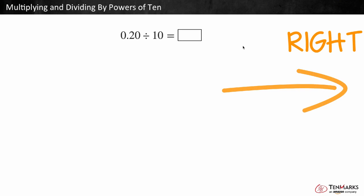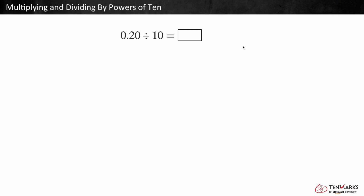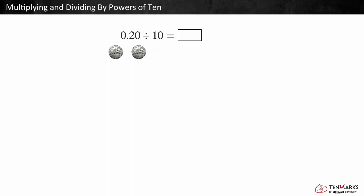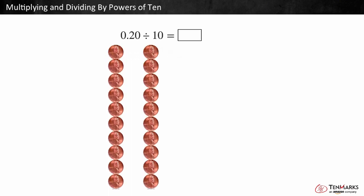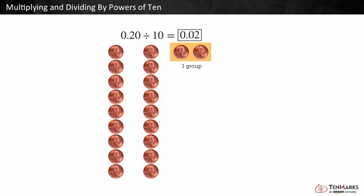Let's look at 20 hundredths divided by 10. This is the same as 20 pennies divided by 10, which is the same as 2 dimes divided by 10. 20 hundredths divided by 10 is equal to 2 hundredths, or 2 cents. Notice that the digits move to the right one place when dividing by 10.